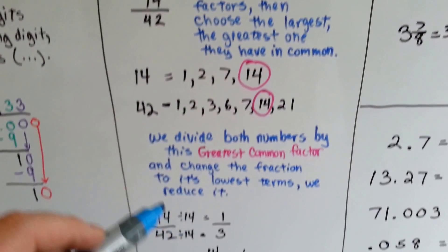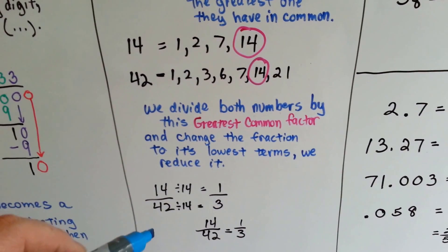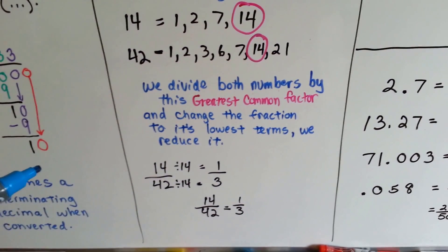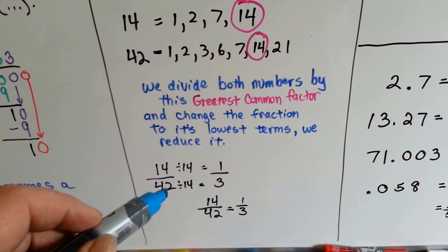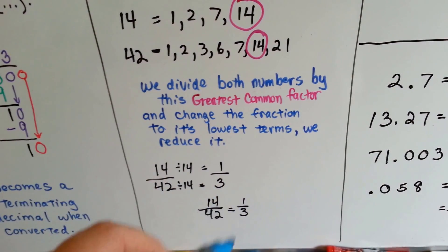And we choose the one that they have in common that is the largest. So that would be 14. We divide both numbers by this greatest common factor and change the fraction to its lowest terms. 14 divided by 14 is 1. 42 divided by 14 is 3. 14 over 42 becomes 1/3.